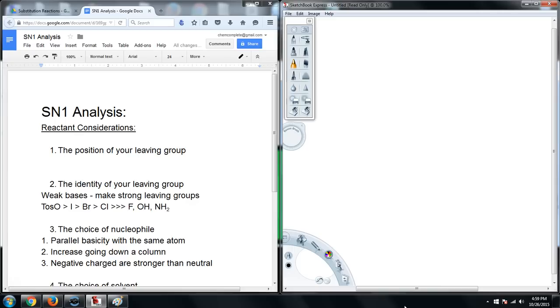So SN1 reactions, substitution and nucleophilic stay the same, but now the one means unimolecular instead of bimolecular. And so what this is going to mean is that we are only dependent on the leaving group leaving before the nucleophile comes in. So coming over here to the whiteboard...